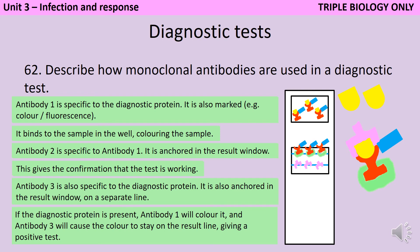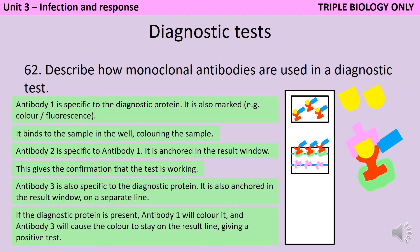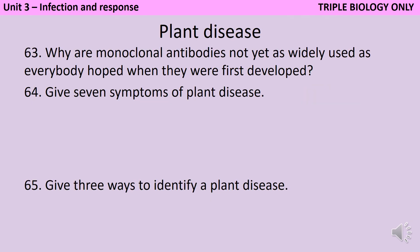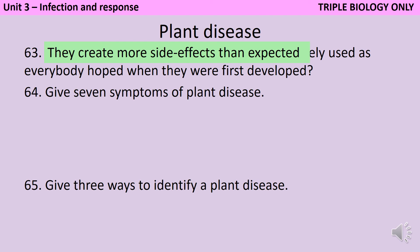The third antibody is specific to the protein being diagnosed. If the protein is present, antibody one colours it and antibody three catches it at the results line, giving a positive test. We're not using monoclonal antibodies as much as initially hoped because there are far more side effects in their use in medicine than expected. At the moment we're using them a lot for diagnostic testing but far less for treatments where they're actually introduced into the body.